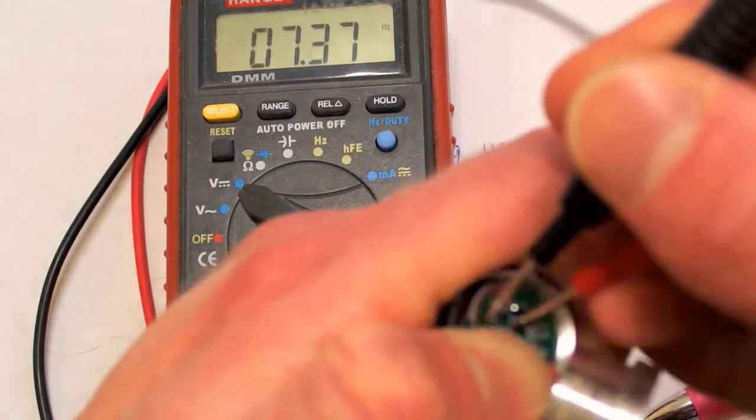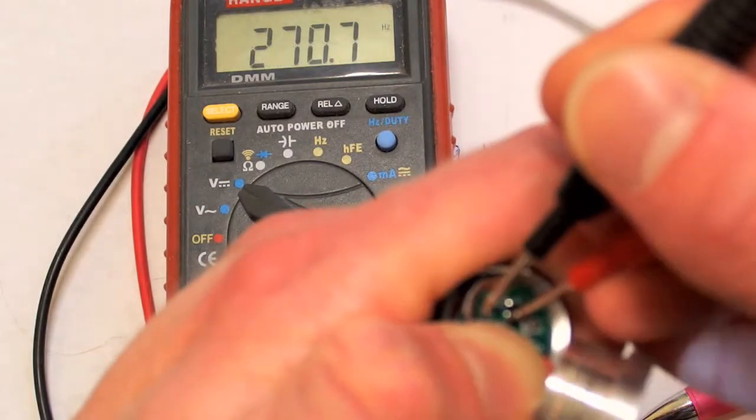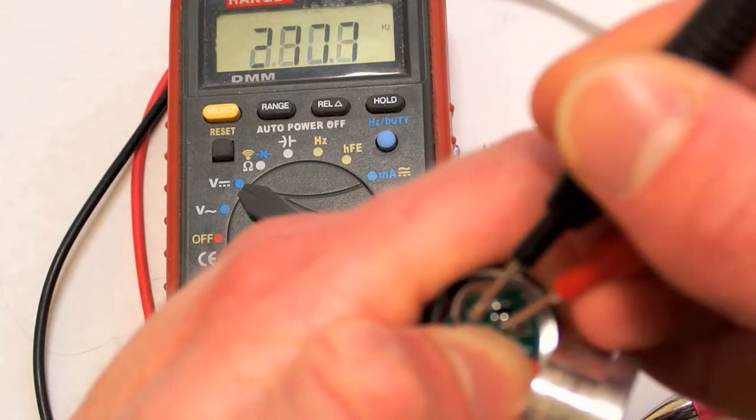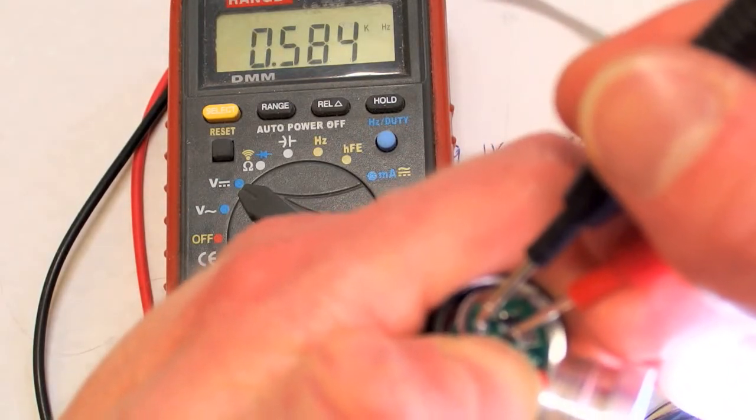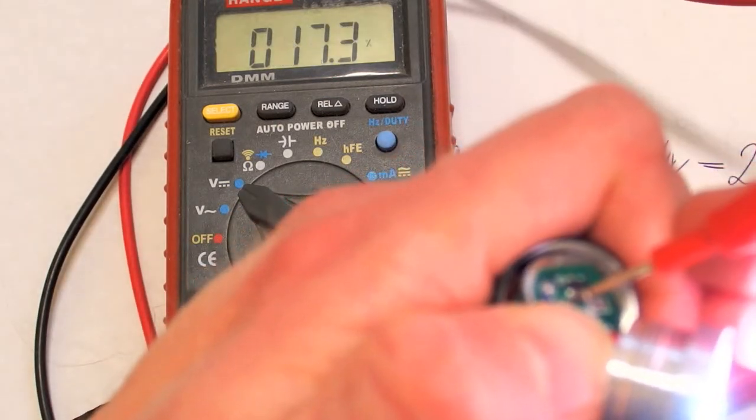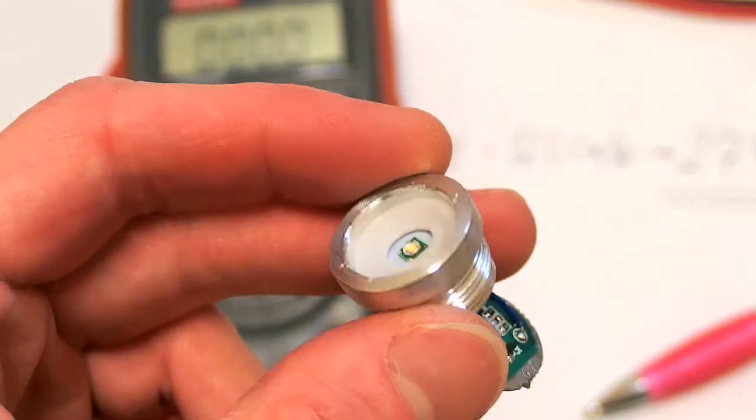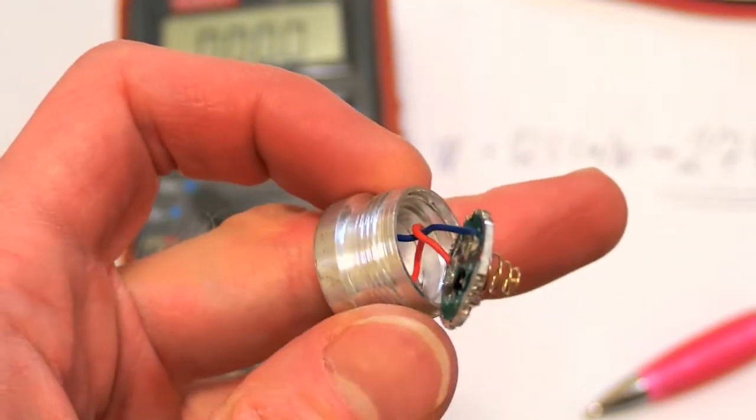And the flicker frequency is about 11 hertz. And the switching frequency of the brightness modulation is about 0.56 kilohertz. And the duty is about 26 percent. So the power at low power setting is about one quarter.